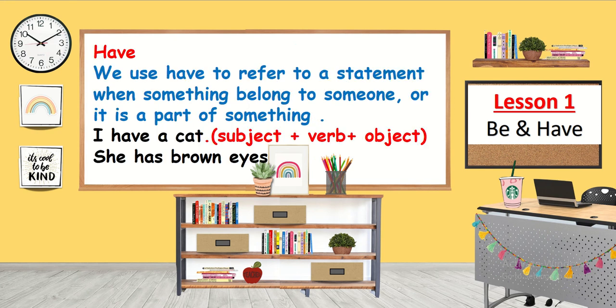We use 'have' to refer to a statement when something belongs to someone or is part of something. For example: I have a cat. Here we have a simple sentence: subject, verb, and object.